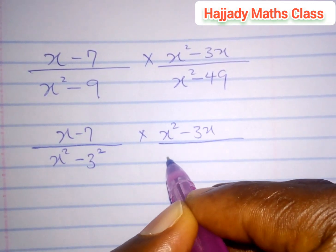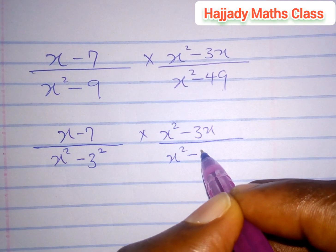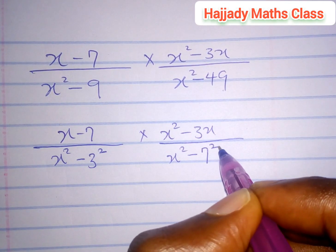Divided by (x² - 7²). Since 49 is also a perfect square, we can have it as 7 squared.